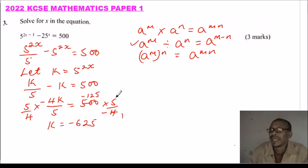But we know our k is the same as 5^(2x). It's just like 5 to power 2x equals -625.